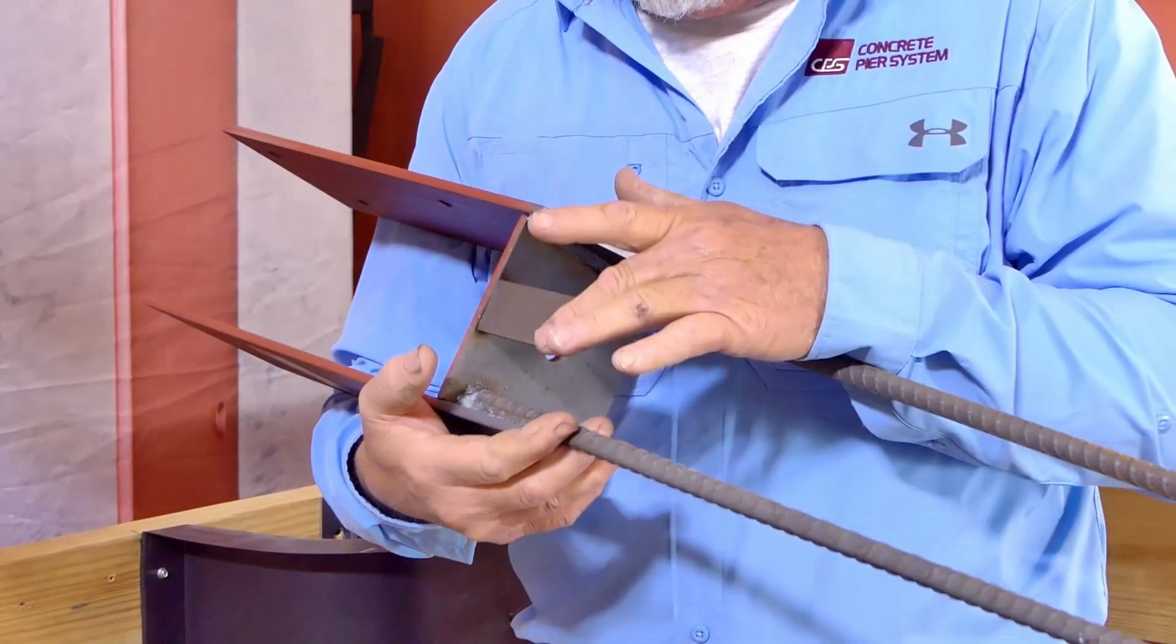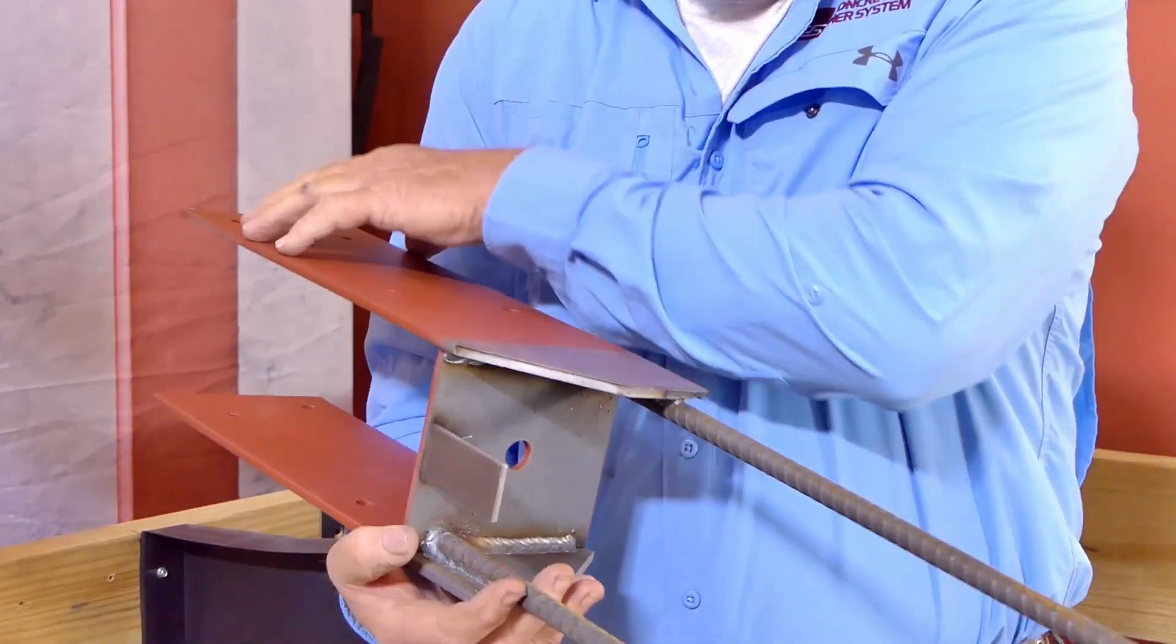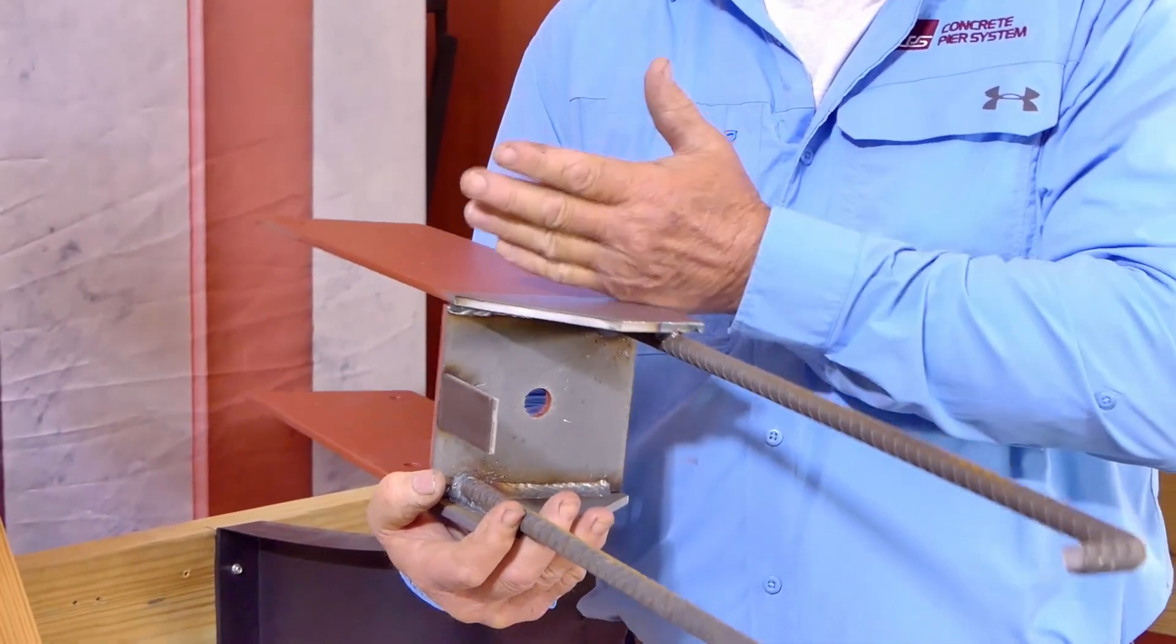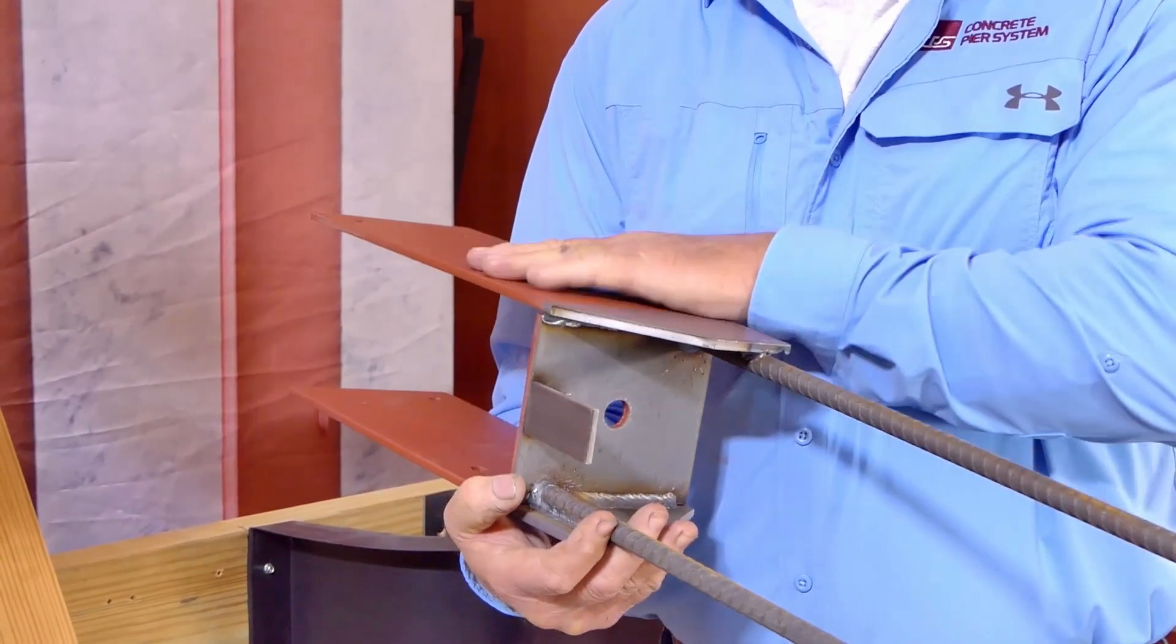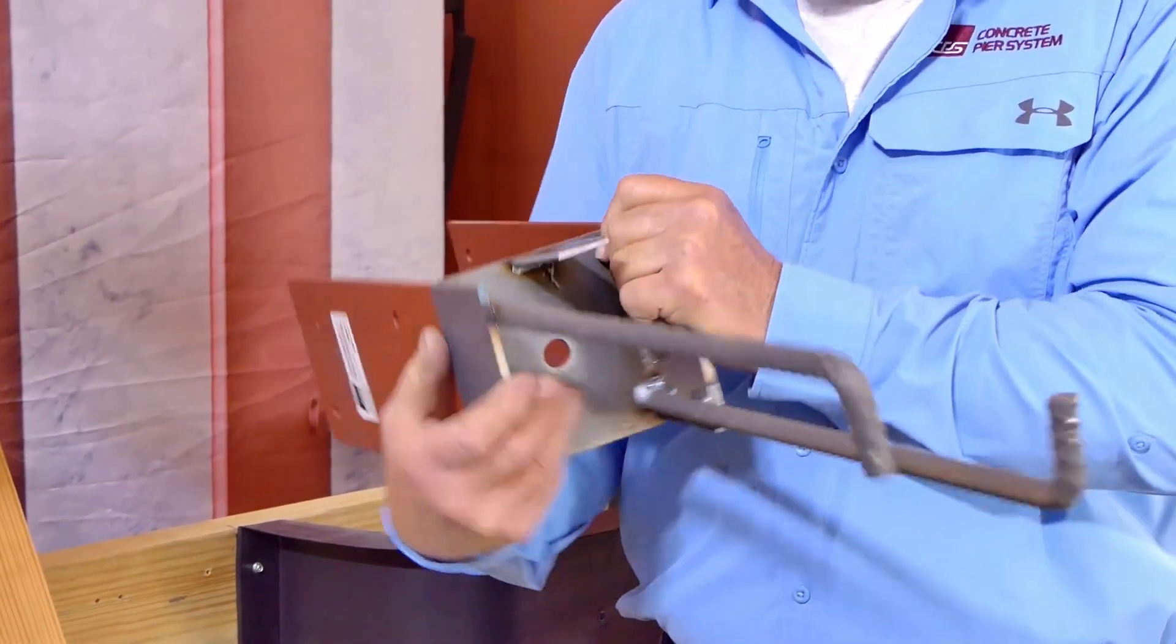There's your little locator tab that we weld on. Your sides are continuous, they're not bent. In fact, the rebar's not welded to the bottom plate entirely.